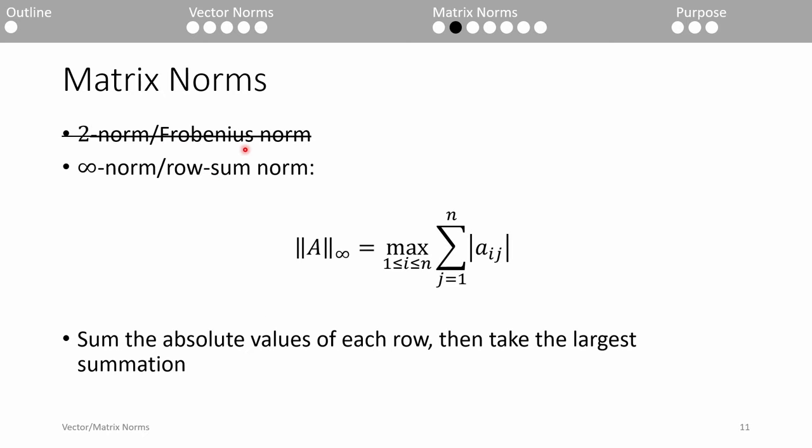The 2-norm for matrices actually involves some material beyond the scope of the course, so we'll skip it for now and proceed directly to the infinity norm. The matrix infinity norm is pretty much identical to the matrix 1-norm, but we scan across each row instead of down each column. Within each row, we sum the magnitudes of all the elements, then we pick the largest summation. This is also fittingly referred to as the row-sum norm.